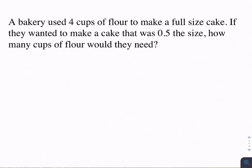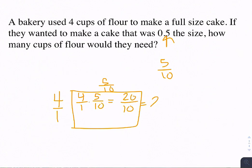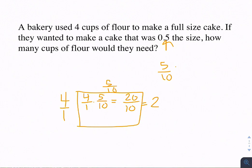A bakery used 4 cups of flour to make a full-size cake. If they wanted to make a cake that was 0.5 the size, how many cups of flour would they need? This one is pretty simple for us. We would do 4 on one side, 5 tenths on the other. We're just changing that 0.5 into 5 tenths because there is a 5 in the tenths place. So 4 over 1 times 5 over 10, then we get 20 over 10, which is really 2. 2 wholes exactly.